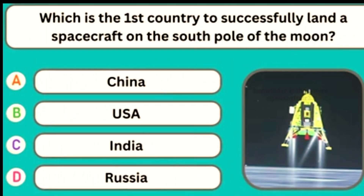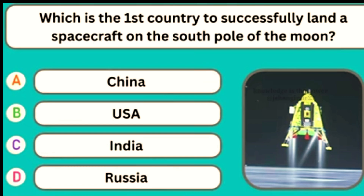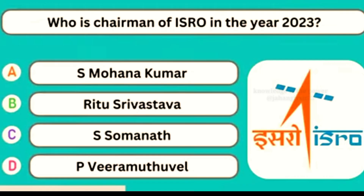Which is the first country to successfully land a spacecraft on the south pole of the moon? Option C — India. Who is the chairman of ISRO in the year 2023?